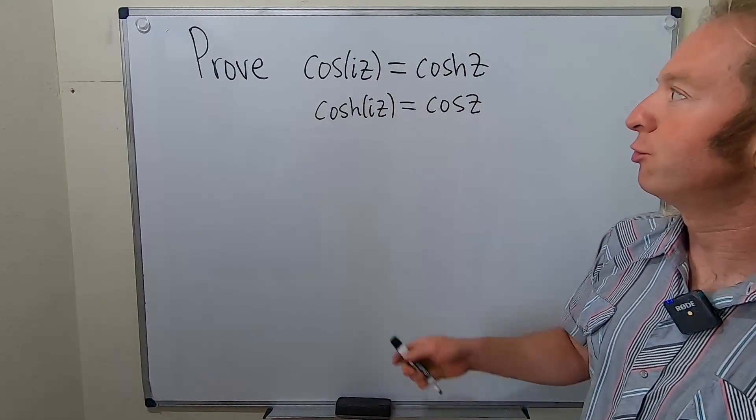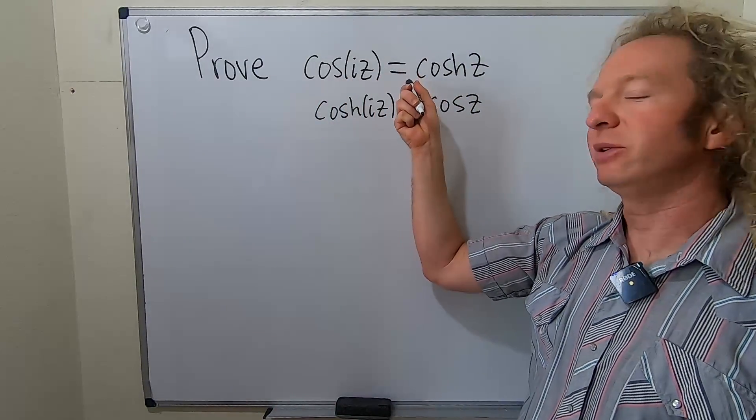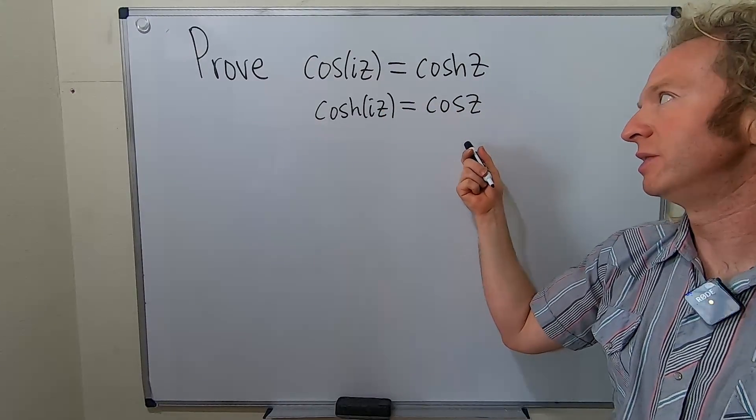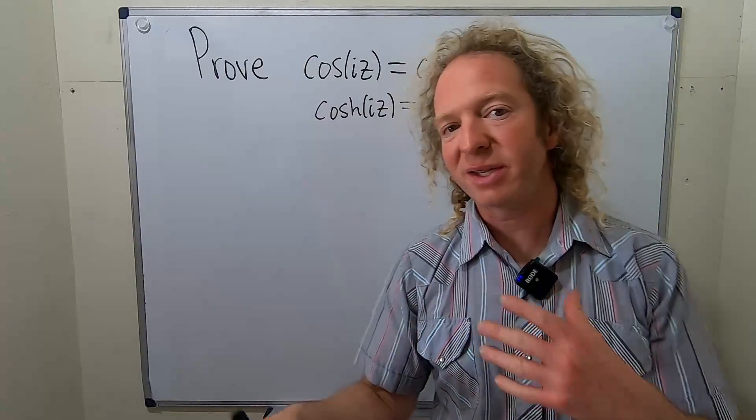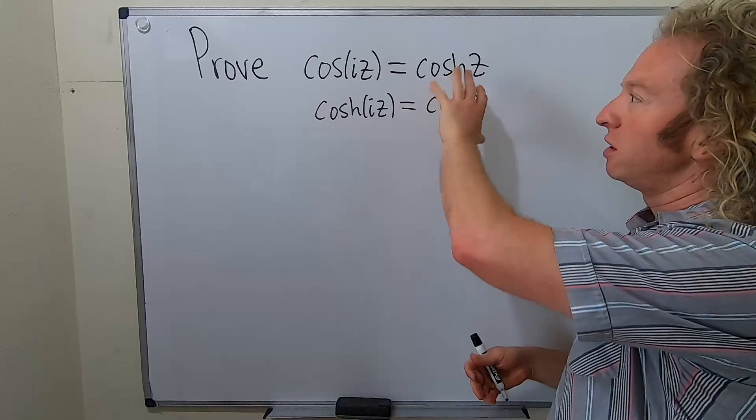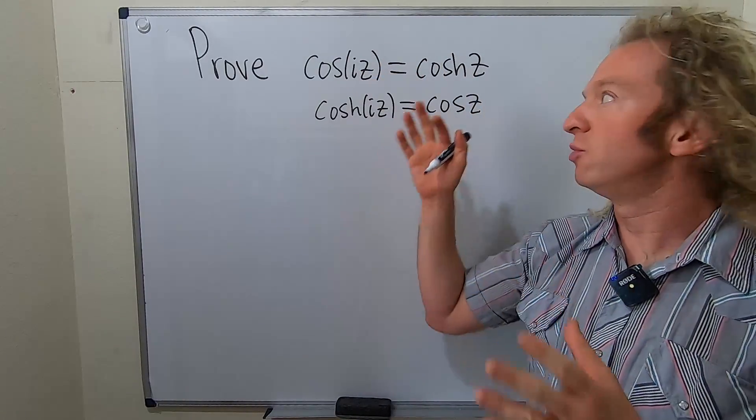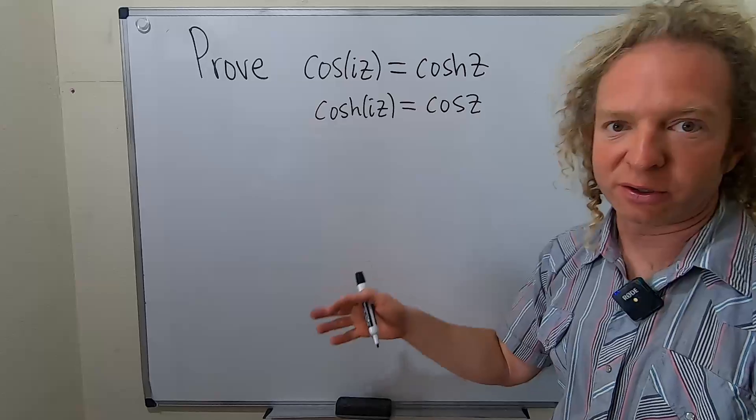Hey, what's up? So in this video, we're going to prove that the cosine of iz is equal to cosh z and the cosh of iz is equal to cos z. So here, z is a complex number. Basically, these equations relate the hyperbolic cosine to the regular cosine.